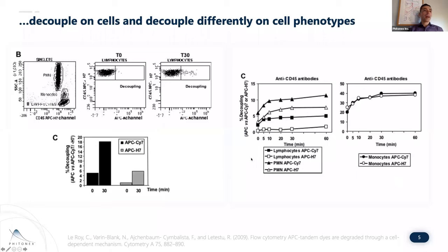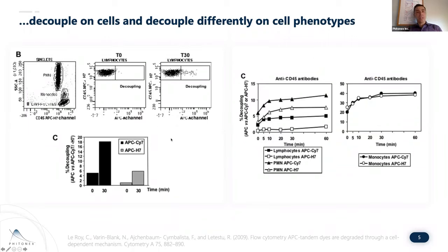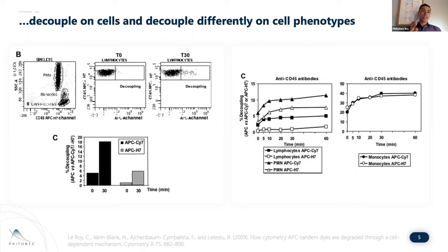The second thing I found just as interesting: there's actually a cell-type dependent mechanism where you see tandem degradation. They looked at both APC Cy7 and APC H7 tandem dyes, both conjugated to anti-CD4. They quantitated decoupling across different cell types. After just 30 minutes on lymphocytes, you see a good amount of decoupling approaching 20% for APC Cy7 — a little bit better for H7. But regardless, you're seeing decoupling.